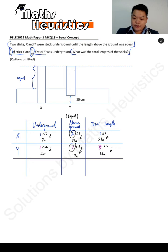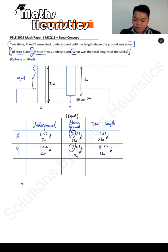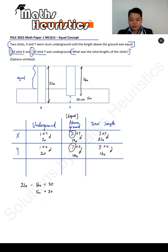You can see over here the total length of Y has to be 16 units, and the total length of X has to be 21 units. Once you're able to derive this, you can see that the difference between them will be five units, and that five units will represent 30 cm.